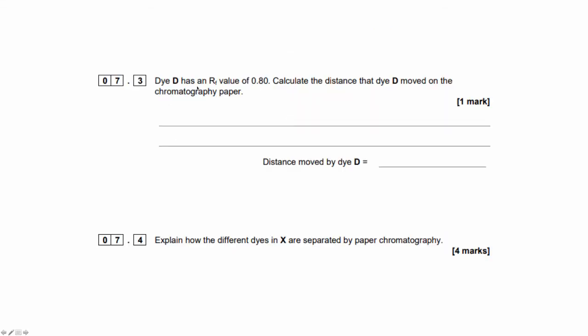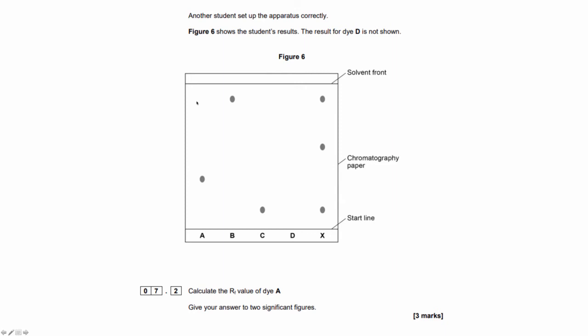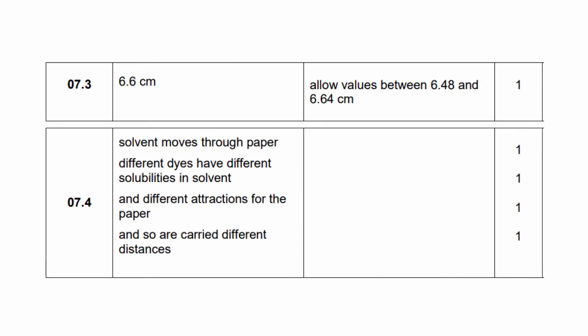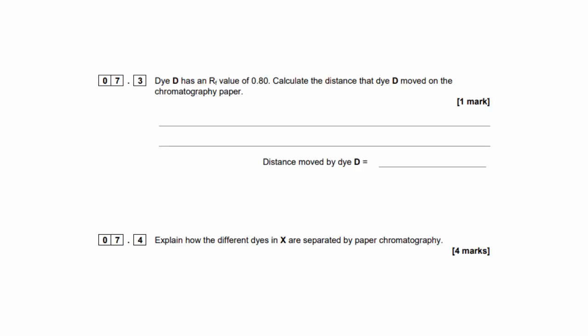Now dye D has an RF value of 0.8, and the question is to calculate the distance that dye D moved from the chromatography paper. So to do this, what you would need to do is measure the distance from the solvent front to the start line and actually times that by the RF value, which is the ratio of the distance the dye moved compared to the distance of the solvent. And you should get 6.6 centimetres.